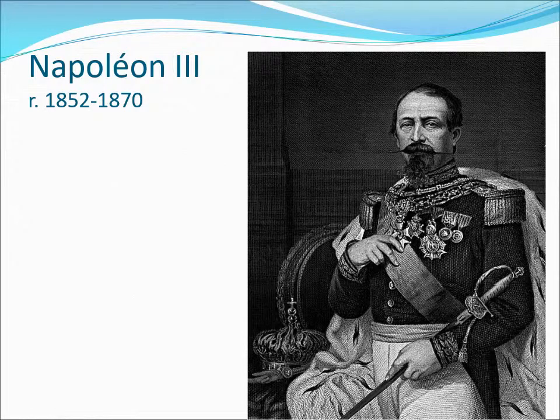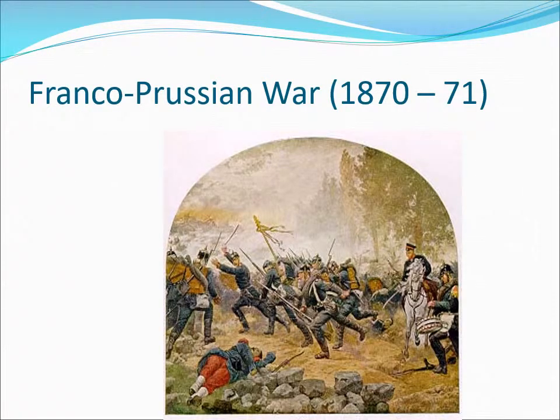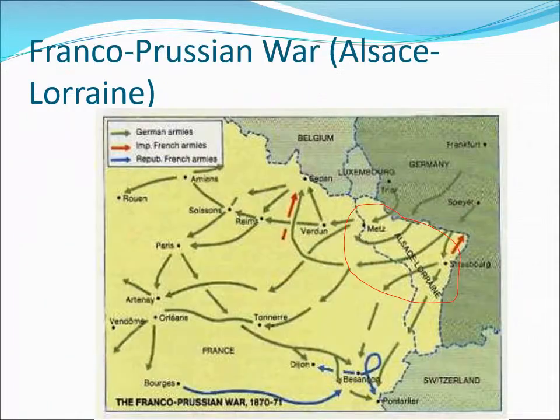Napoleon III was the ruler of France at this time, and he fell for Bismarck's trap and ran headlong into war. Bismarck used this war to extend the German Confederation south of the Main River. France lost, had to pay reparations, and had to hand over two of its border provinces — Alsace and Lorraine — which became part of the new imperial Germany.